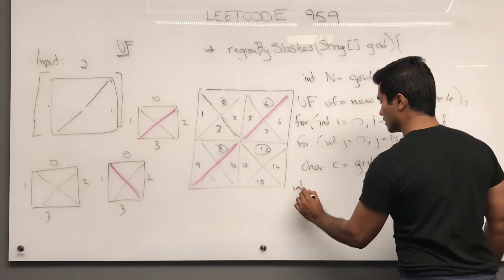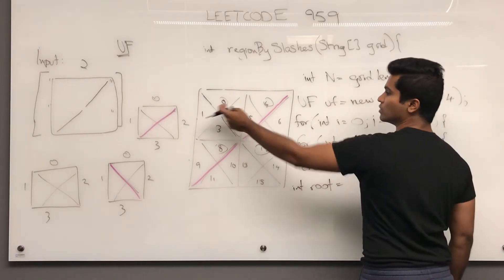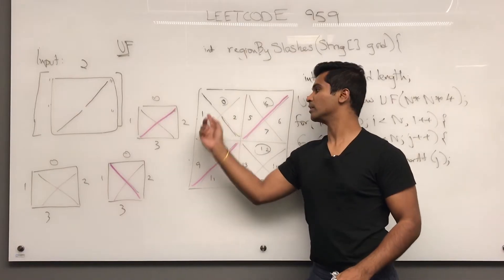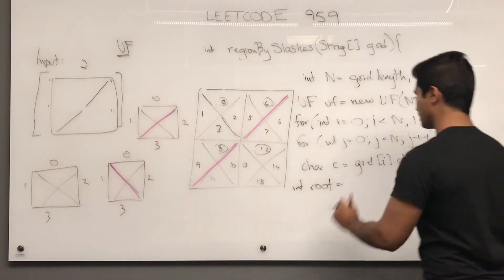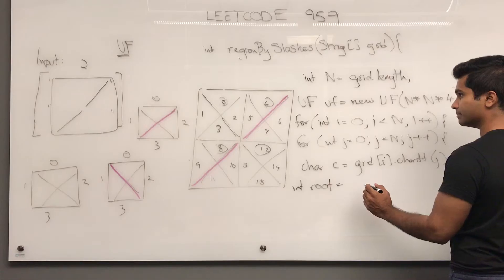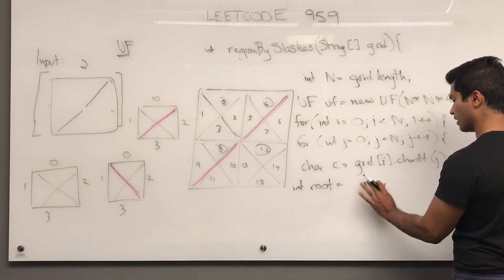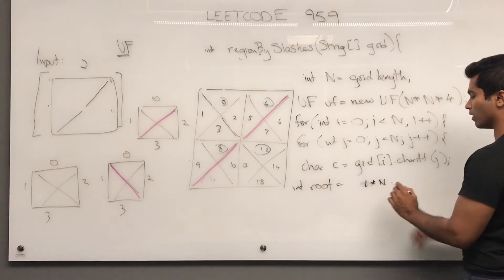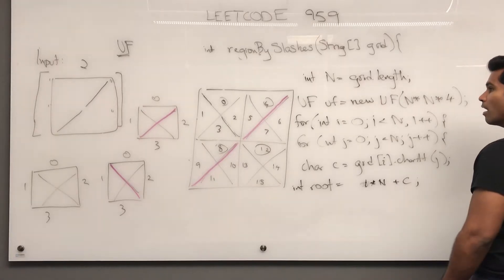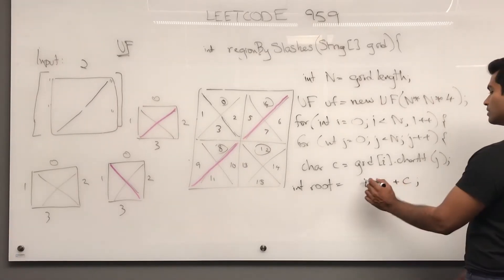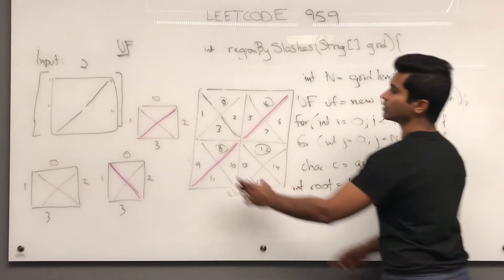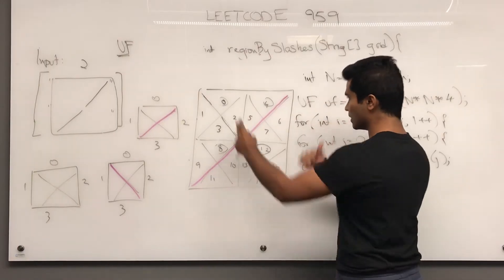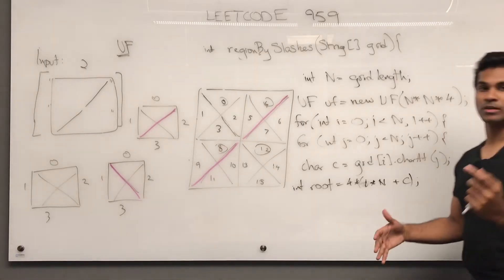And we make use of a number called root which is going to signify the 0, 4, 8, 12. We calculate this so that we can work with the four triangles in each grid square. This is going to be i times n which is the number of columns plus c times 4. So normally this would go 0, 1, 2, 3 but we're going to multiply it by 4 since we're splitting everything into four triangles 0, 4, 8, 12. Now keep track of this because we're going to be using it.